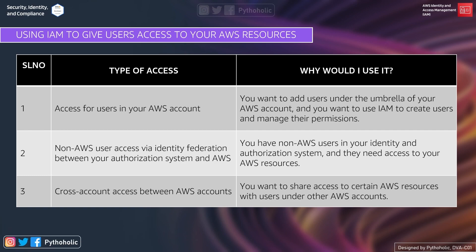Identity federation is the most widely used method in organizations. The third type is cross-account access between AWS accounts — for example, between a dev account and a prod account — where users from one account want to access resources in another. So the three use cases are: access for users in your AWS account, non-AWS user access via identity federation, and cross-account access between AWS accounts.